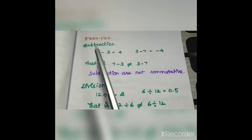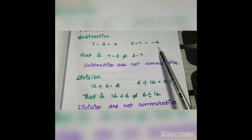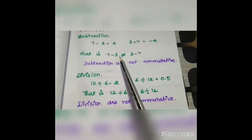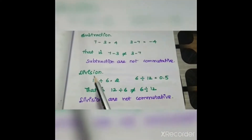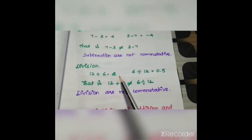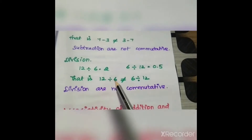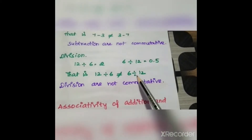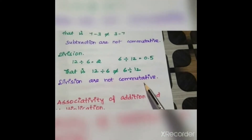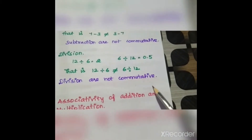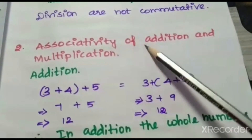Let us see some examples for subtraction: 7 minus 3 equals 4, but 3 minus 7 equals minus 4 — so 7 minus 3 is not equal to 3 minus 7. Therefore subtraction is not commutative. For division: 12 divided by 6 equals 2, and 6 divided by 12 equals 0.5 — so 12 divided by 6 is not equal to 6 divided by 12. Therefore division is not commutative. So subtraction and division are not commutative, while addition and multiplication are commutative.